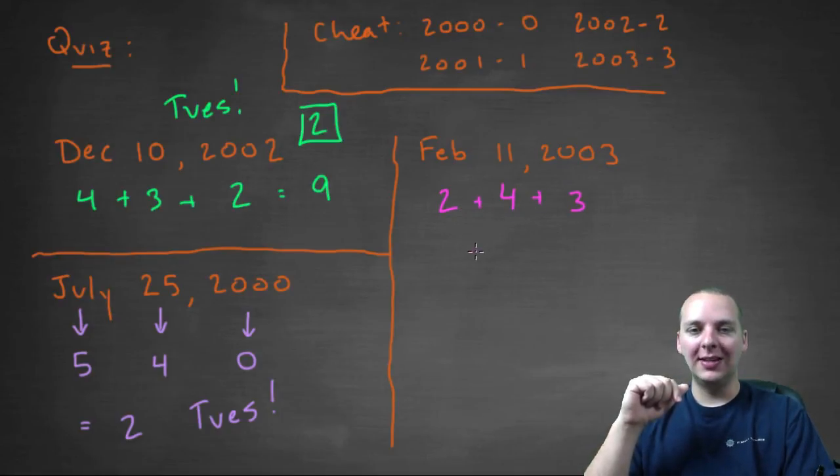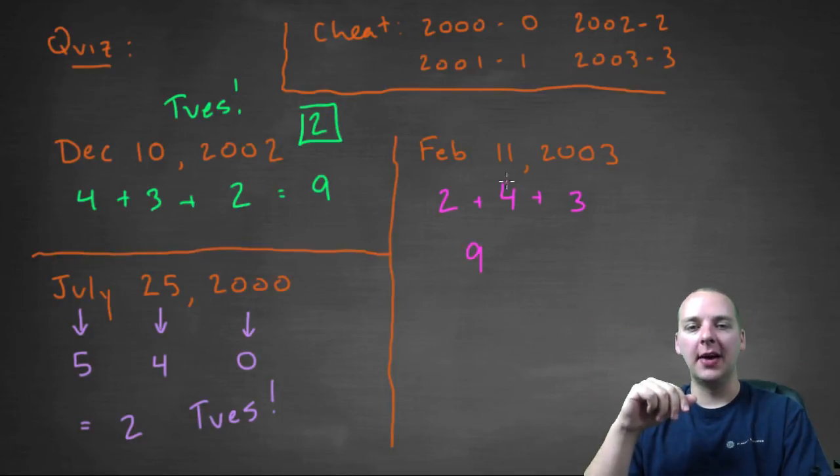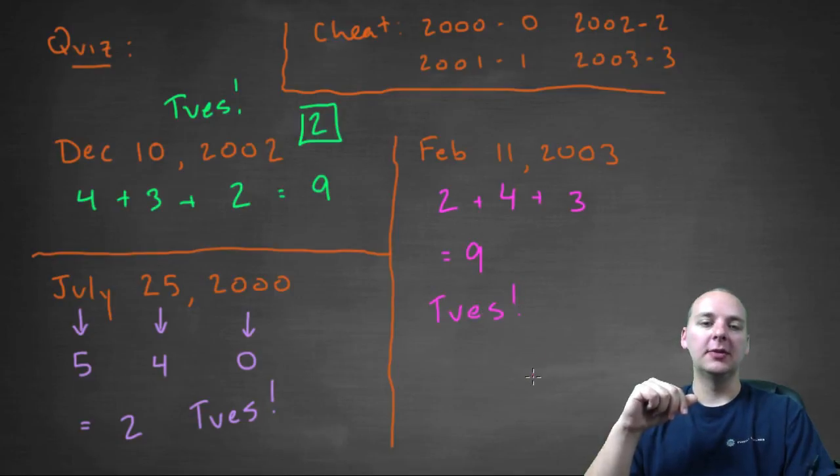And the year code for 2003 is 3. Add these up, you get 9. Okay I didn't really intend for that to happen, I kind of wrote these down randomly, I wasn't trying to make them all Tuesday, so that was kind of accidental. But 9 modulo 7 is 2, so this would be a Tuesday.